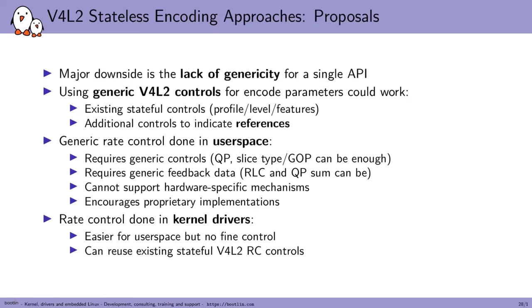The userspace API has encode parameters taking various fields from NALUs: slice parameters, PPS parameters, and a timestamp for reference. On the rate control side, there are encode parameters with QP and the different thresholds, deltas, and so on. We also have encode feedback, which comes from the registers of the H1 encoder. However, the structures are not very generic — they list parameters quite specific to the Hantro. A more generic V4L2 control-based approach would reuse existing stateful controls and add extra ones for missing features, plus generic feedback data like non-zero coefficients or QP sum.